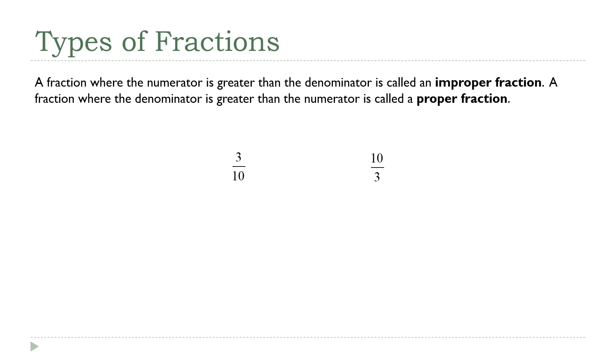I've got two quick examples here. 3 tenths is a proper fraction where the denominator is bigger than the numerator. 10 thirds is an improper fraction because 10 is bigger than 3.